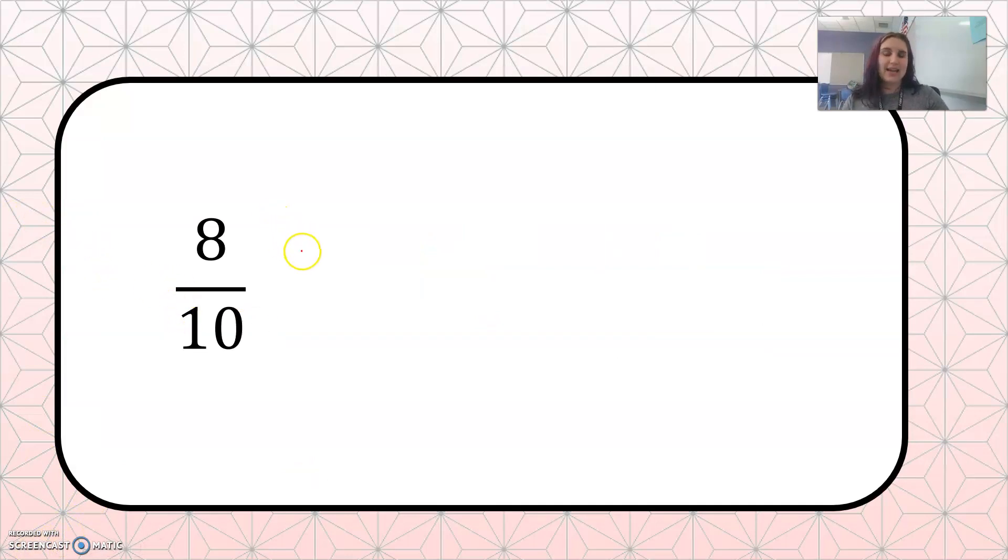How would we write 8 over 10 as a decimal? So this is 8 tenths. And I don't have my chart here, but recognizing the pattern from before, 0.8. This is the tenths place. So 0.8, 8 tenths.